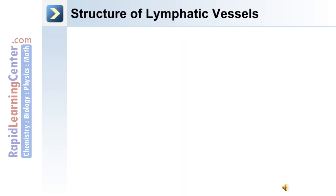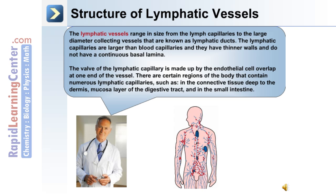The structure of the lymphatic vessels ranges in size from lymph capillaries to large-diameter collecting vessels known as lymphatic ducts. Lymphatic capillaries are larger than blood capillaries and have a thinner wall, but they do not have a continuous basal lamina. The valve of the lymphatic capillary is made up of overlapping endothelial cells at one end of the vessel. Regions with numerous lymphatic capillaries include the connective tissue deep to the dermis, the mucosa layer of the digestive tract, and in the small intestine.